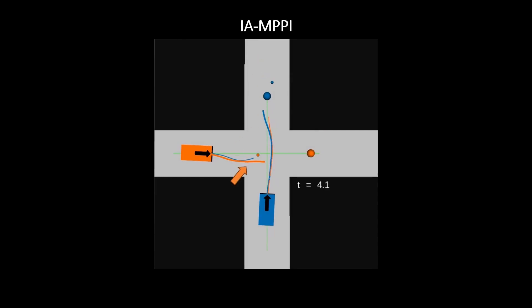The orange agent then makes a plan for itself, depicted by the thick orange line, and a prediction for the future motion of the blue agent, depicted by the thin orange line.